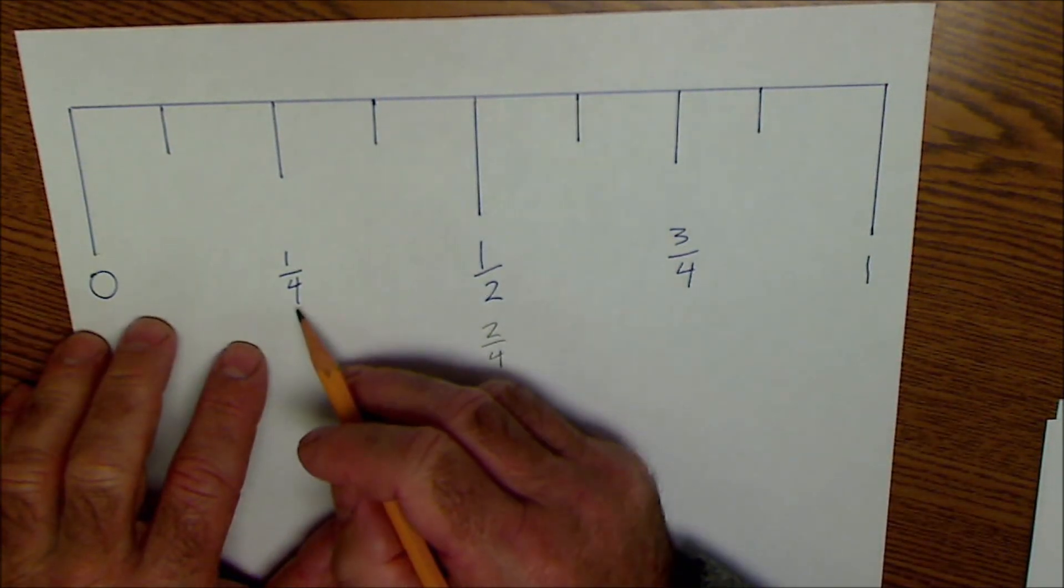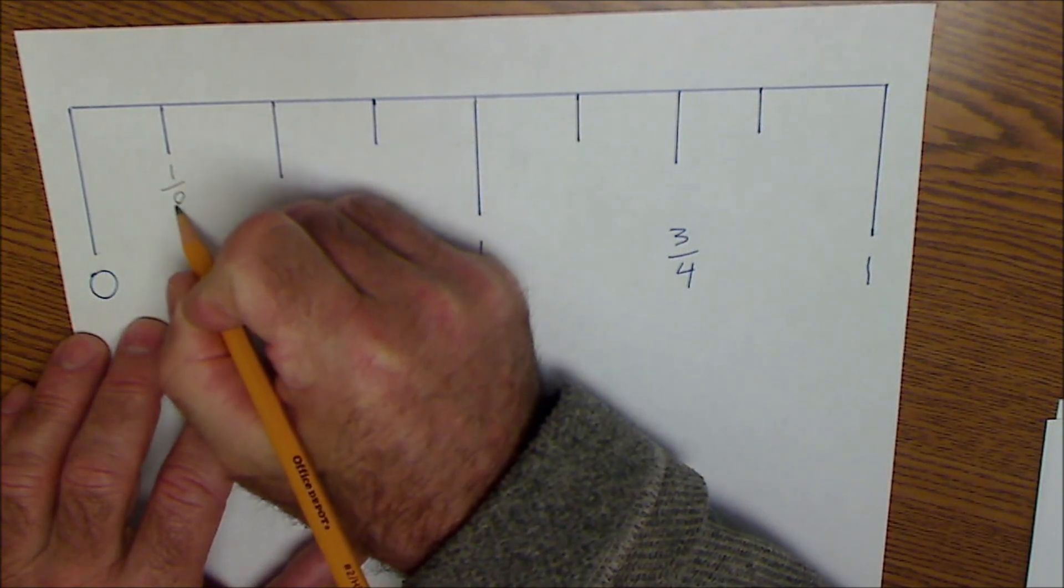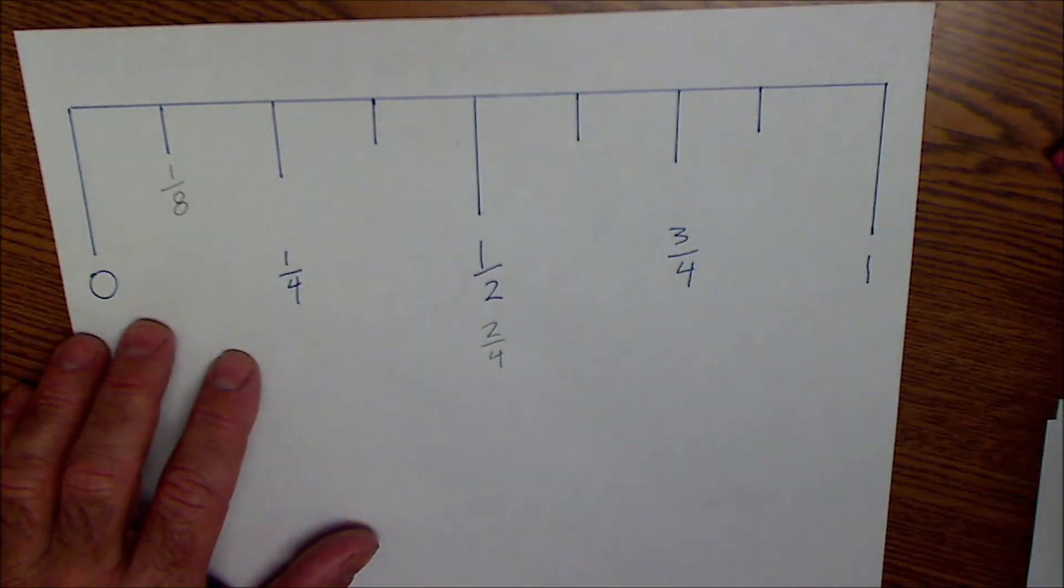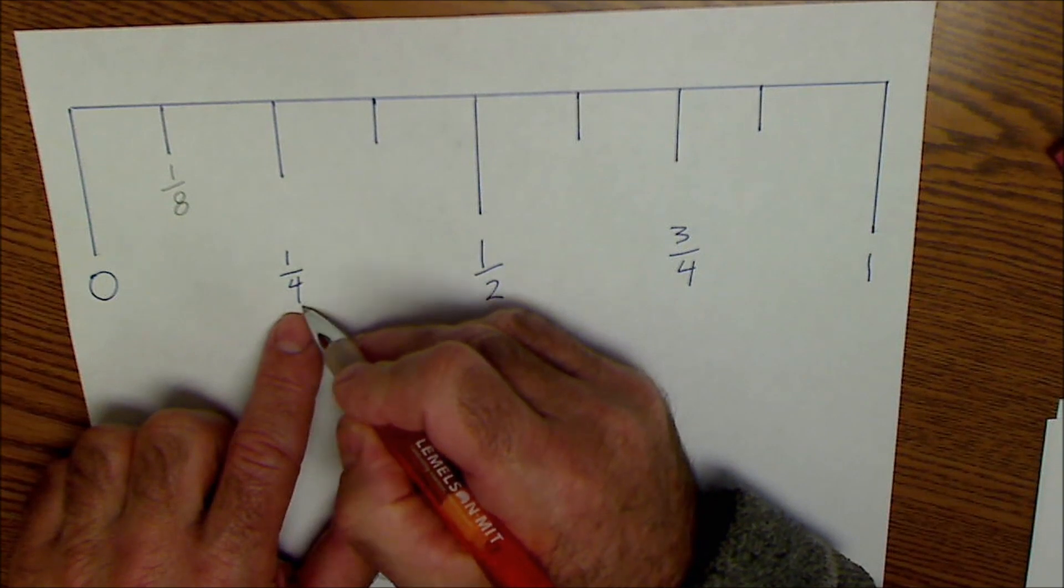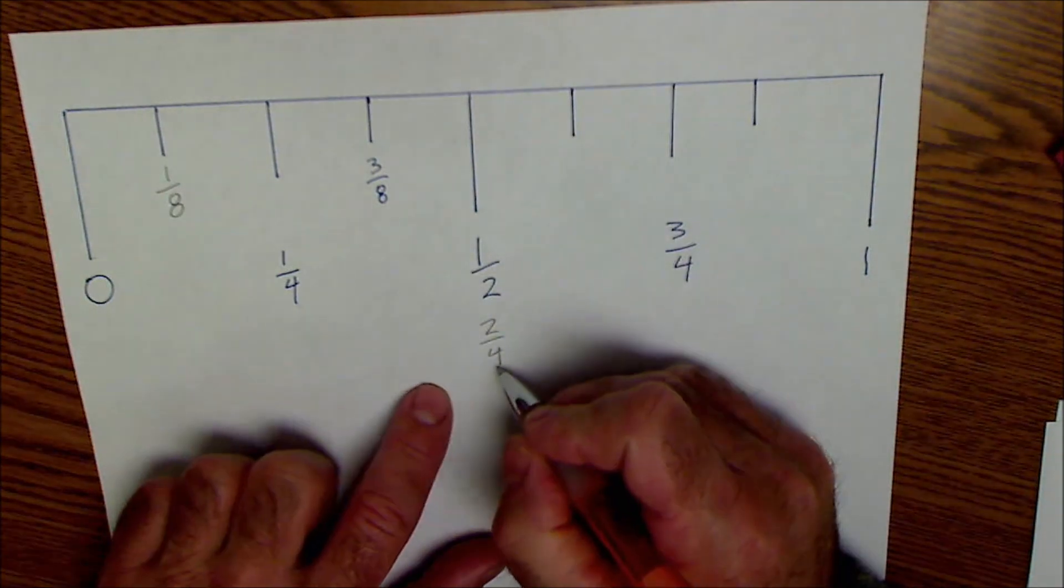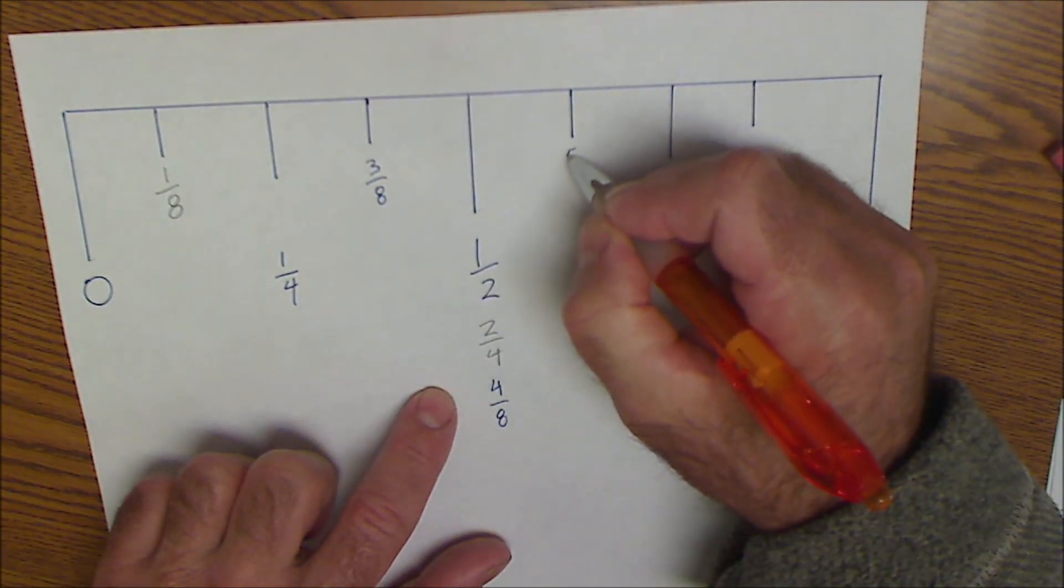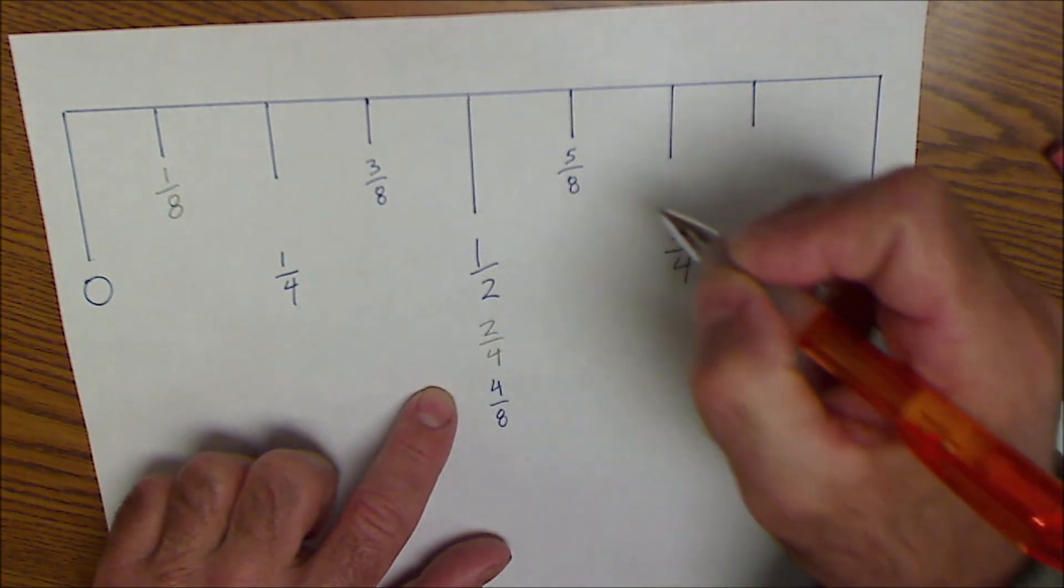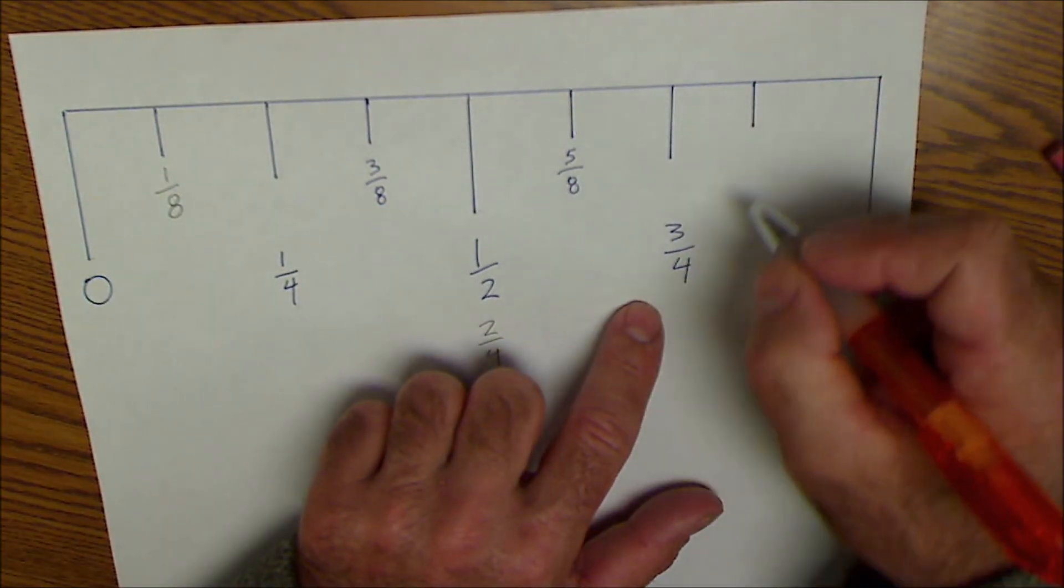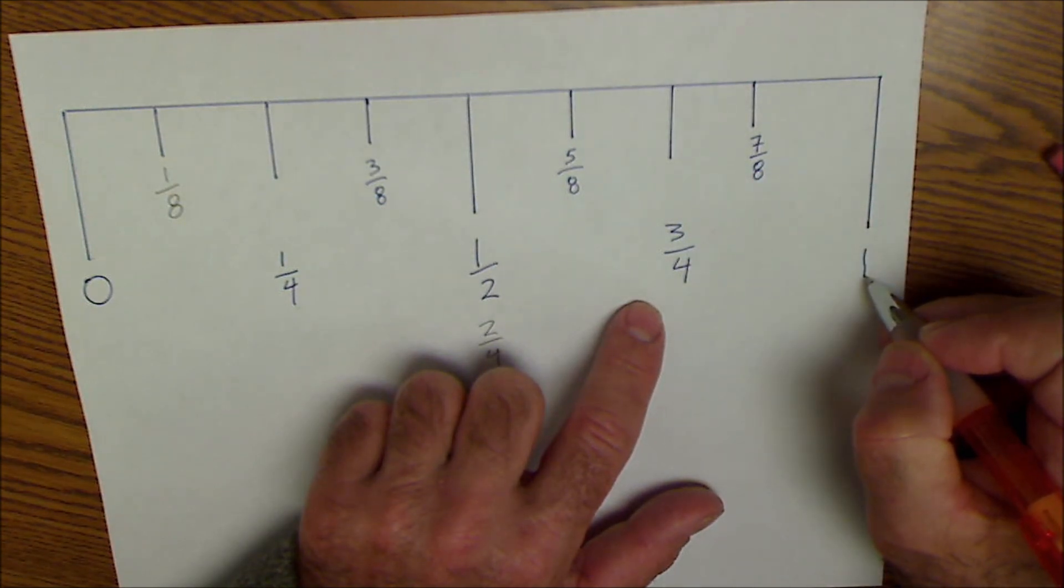Now I'm going to take that one quarter and cut that in half. The way I cut that in half is I double the bottom number. So this is now one eighth. This would be the same as two eighths, this would be three eighths, this would be four eighths, this would be your five eighths, six eighths, seven eighths, and then to a full inch, eight eighths.